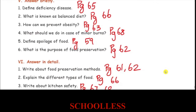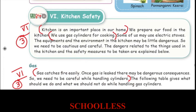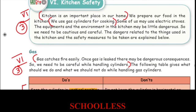Write about kitchen safety — page number 67. The kitchen is an important place in our home. We use gas cylinders for cooking. If we have any accidents in the kitchen, gas catches fire easily, and once gas is leaked, there are many dangerous consequences.